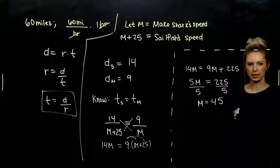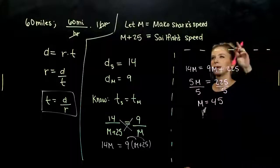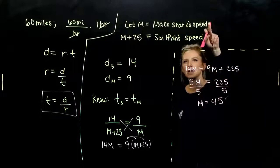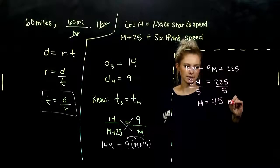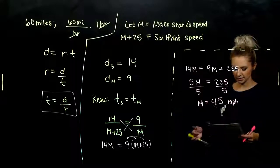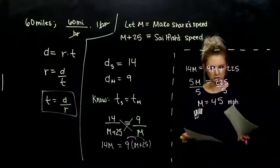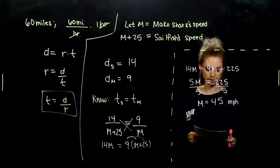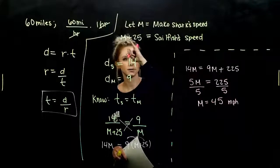So what unit should we put on M? What does M represent? Look back to the very beginning. M was the mako shark's speed. So in this case, miles per hour are our units. And what were we asked to find? Find the speed of each sea animal. So I know the mako's traveling at 45 miles per hour. So what does that mean for our sailfish?